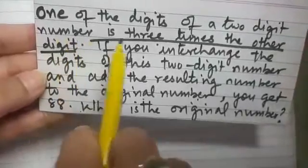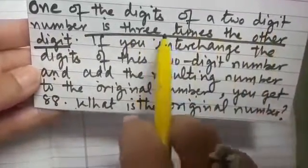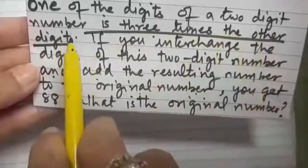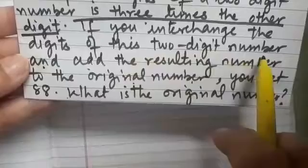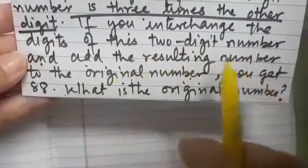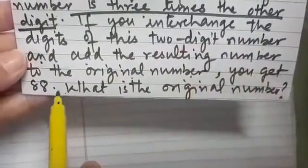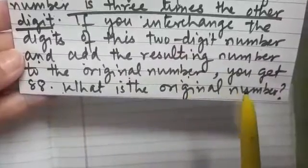It says one of the digits of a two-digit number is three times the other digit. If you interchange the digits of this two-digit number and add the resulting number to the original number, you get 88. What is the original number?